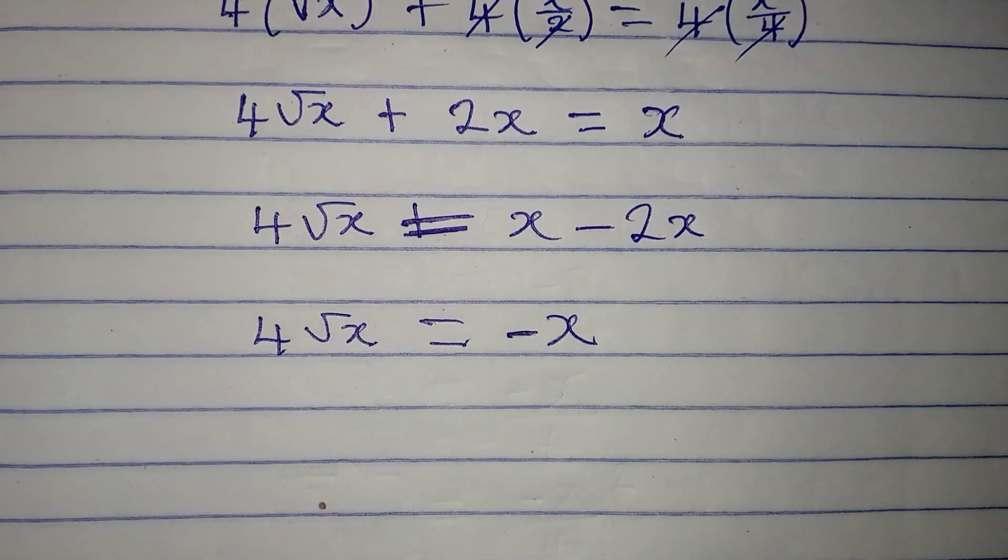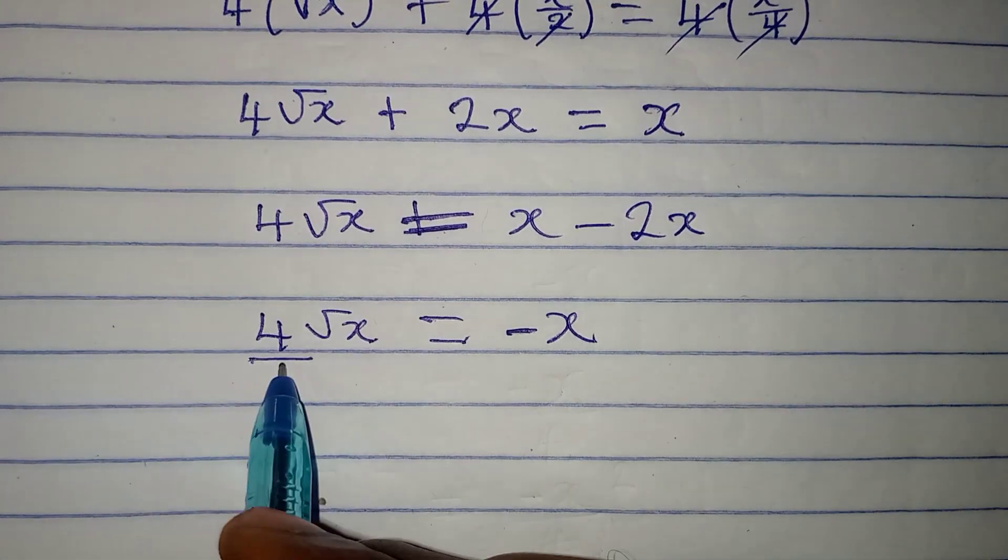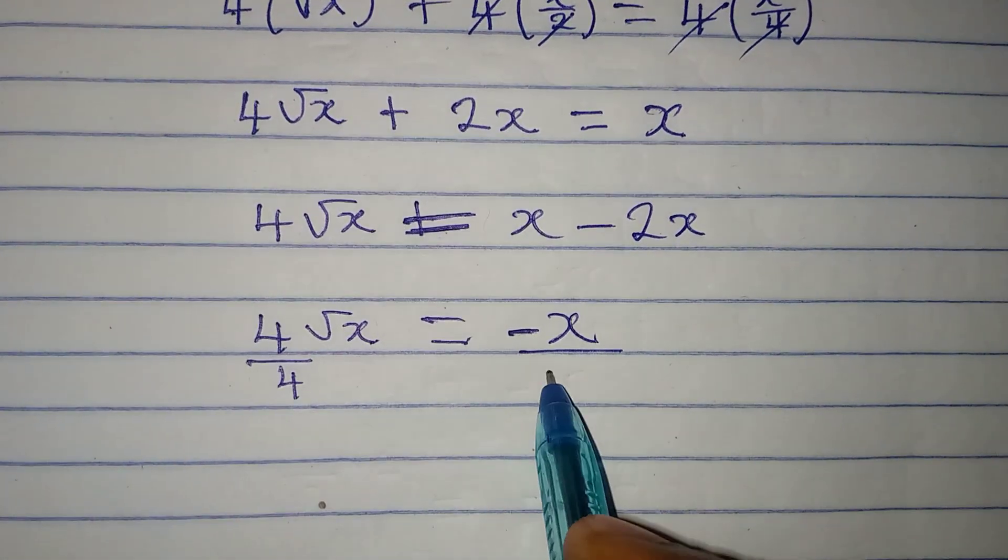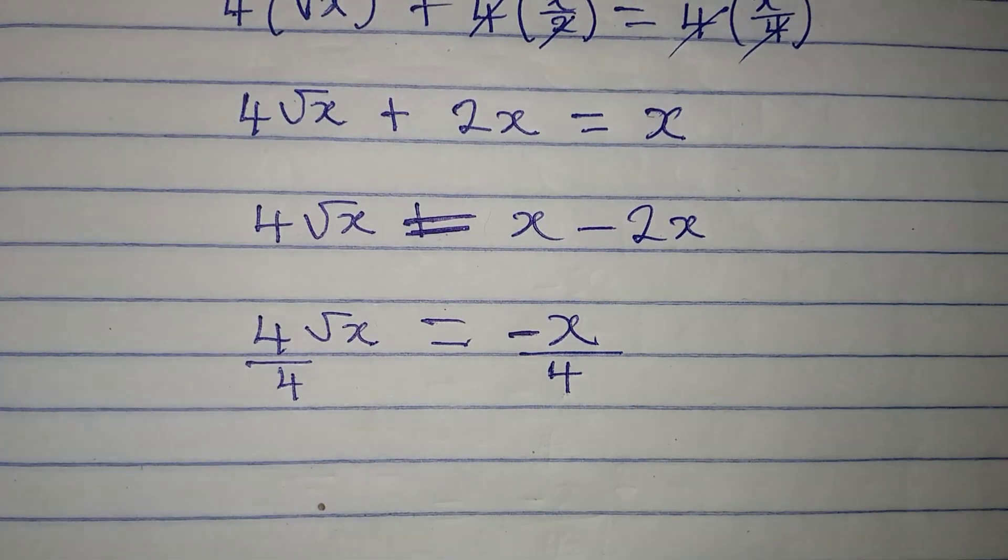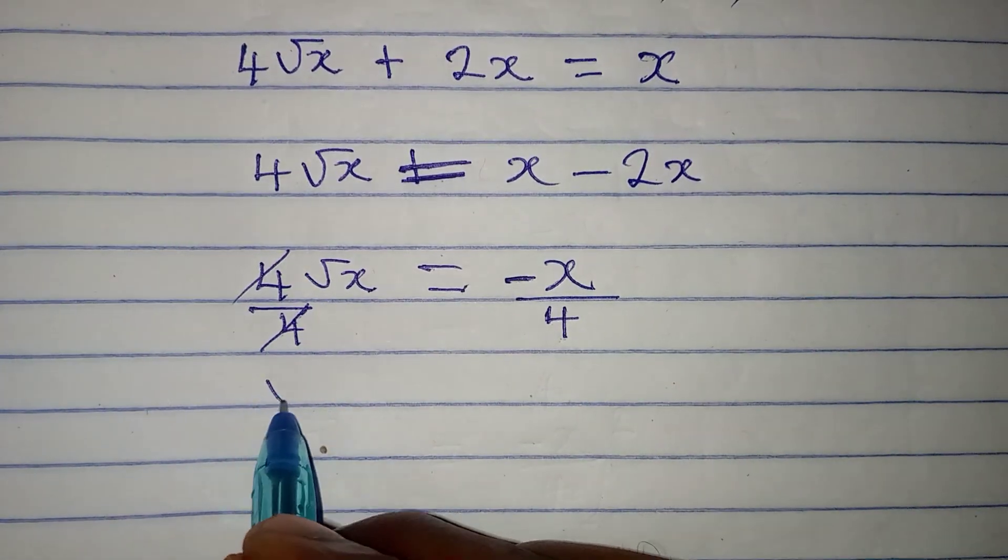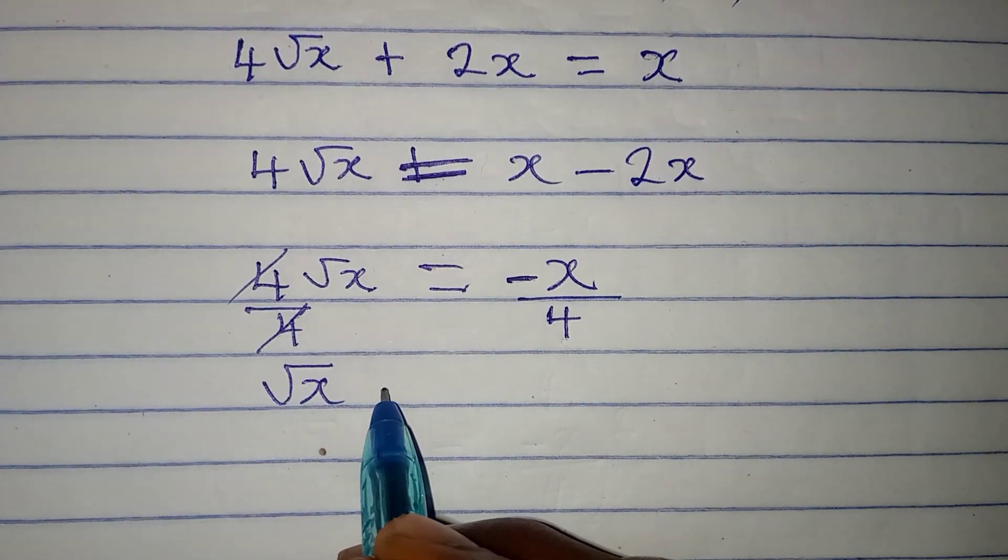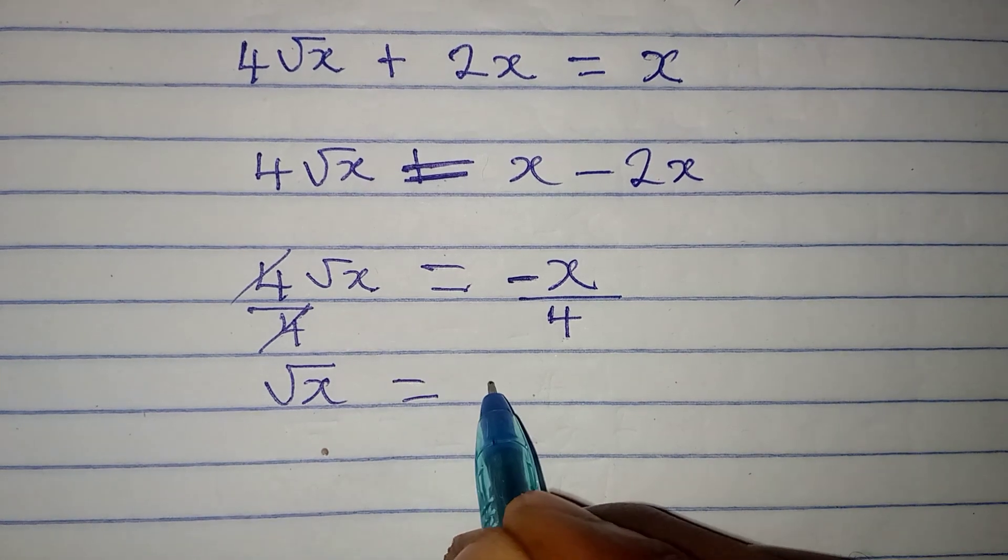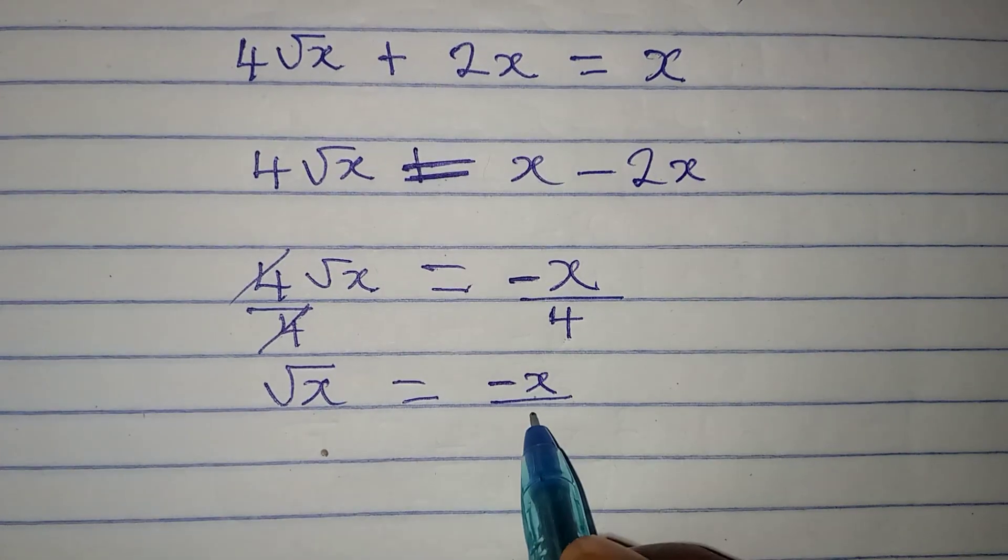Now the next thing is to divide both sides by 4. Remember what you do on one side you have to do on the other side. This cancels and then root x will be equal to minus x over 4.